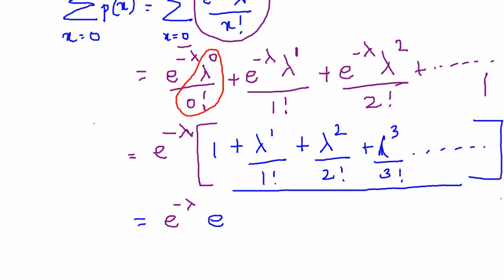Because you know the formula for e^λ or e^x is 1 plus x plus x^2 by 2 factorial, x^3 by 3 factorial and so on. Now when I have two powers like this which is multiplied, I am going to add these two powers, e^(-λ + λ), which is nothing but e^0 which is equal to 1.